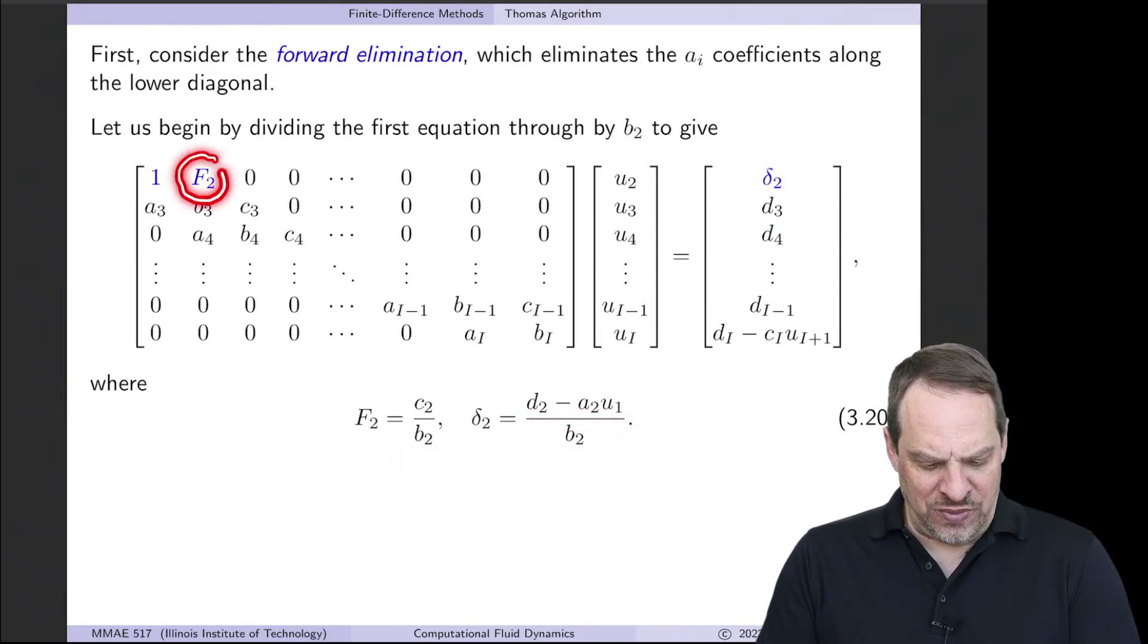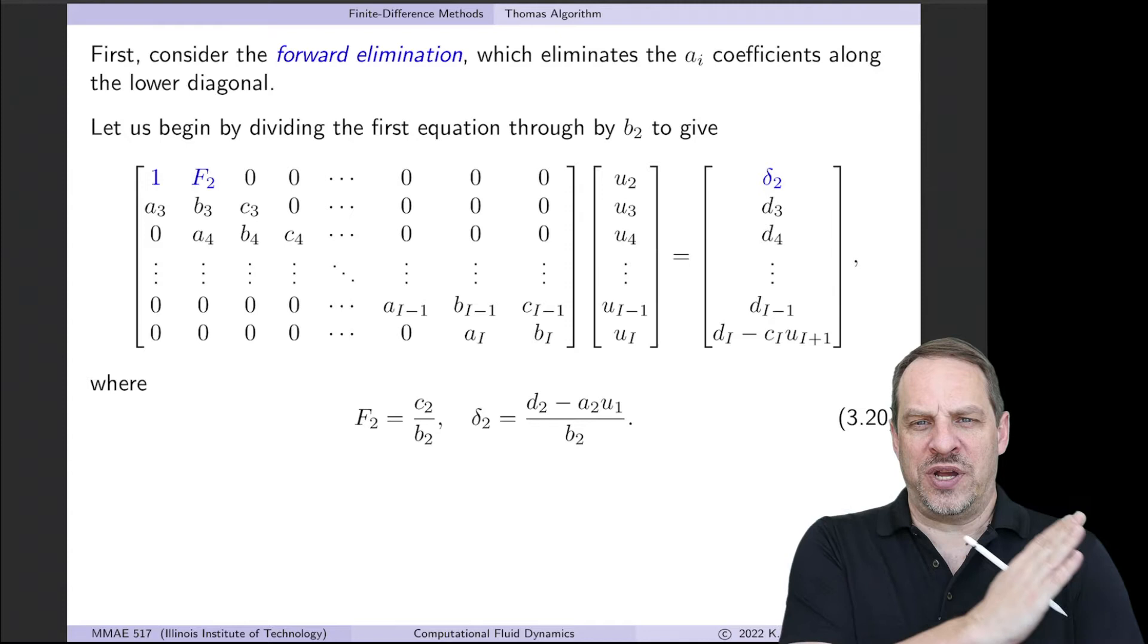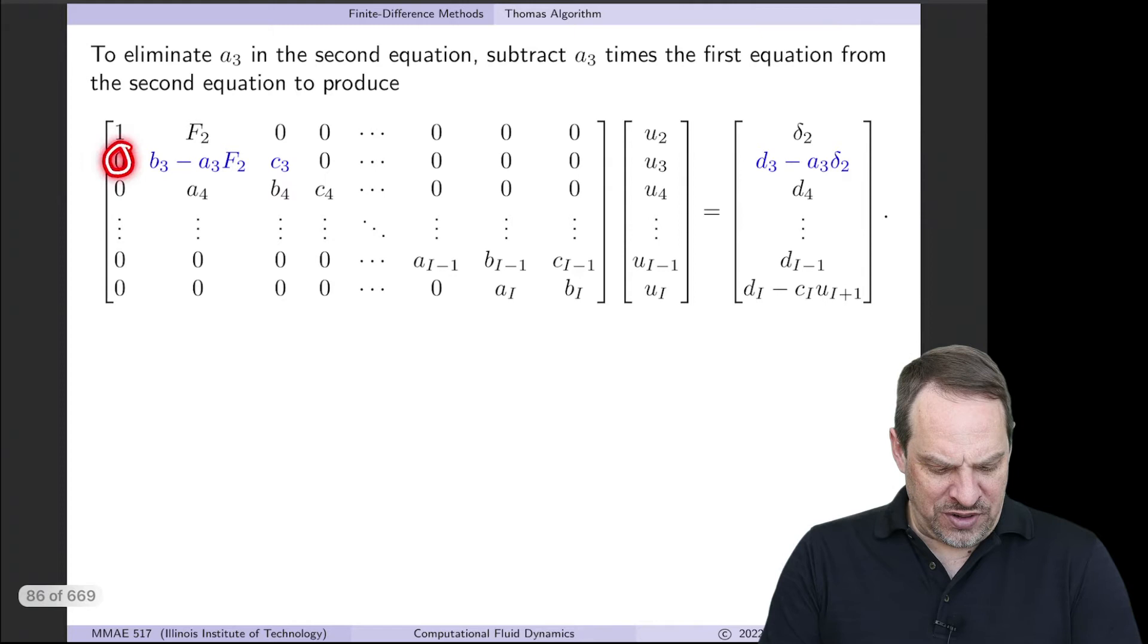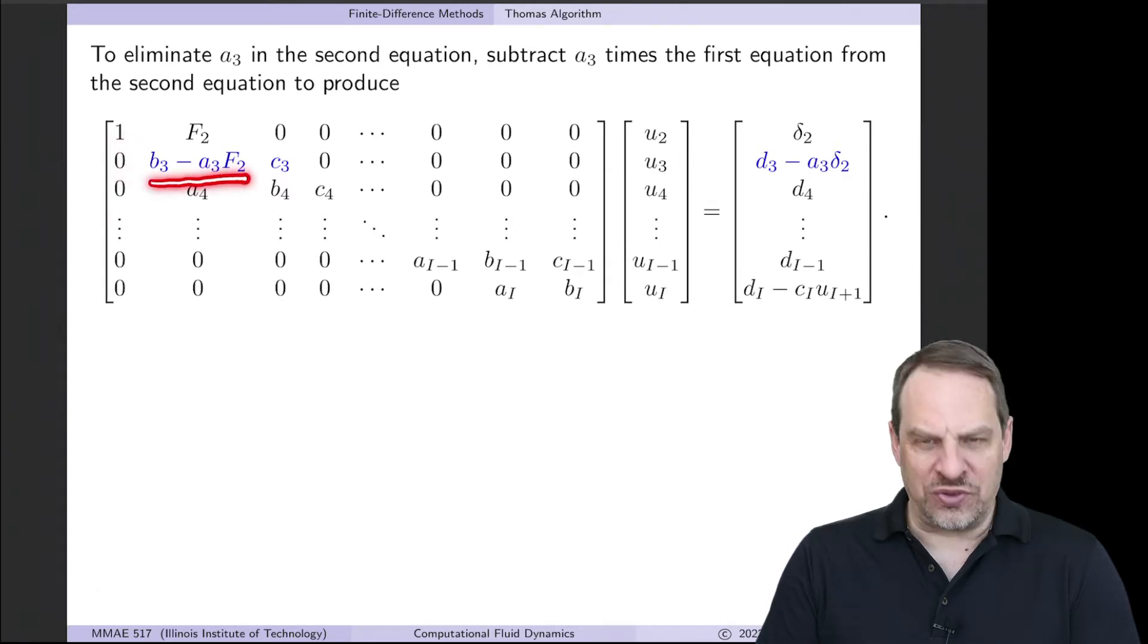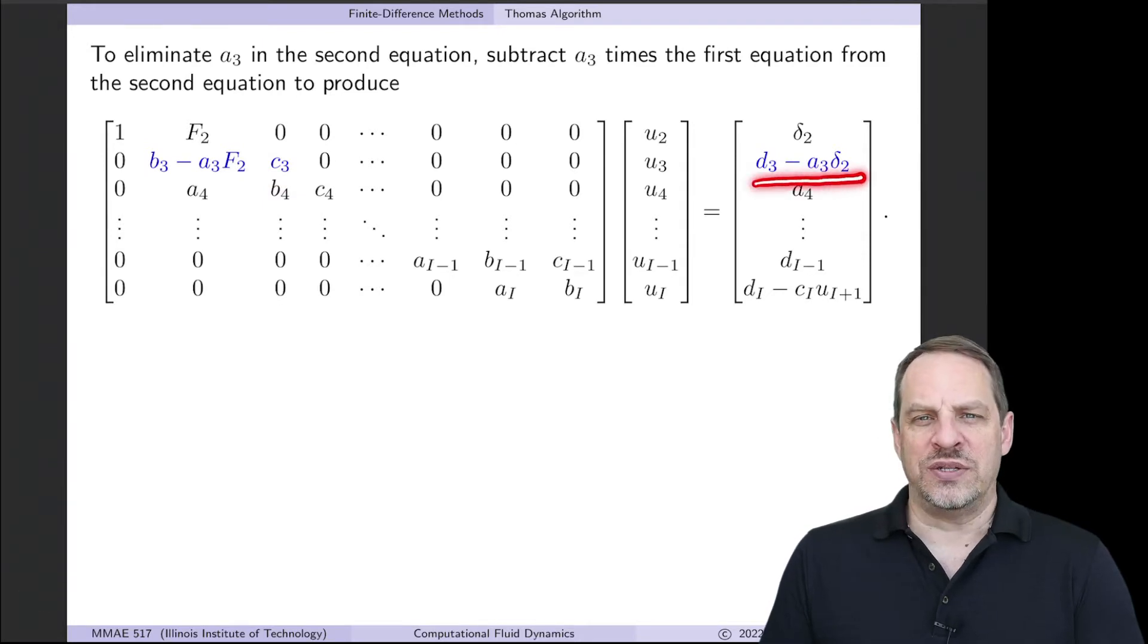You'll notice that we're going to build up two arrays or two vectors, capital F and delta, as we go from the left to the right, from 2 to capital I. Then the next step will be to eliminate this element in our matrix. So to eliminate the A3, we multiply the first row by A3 and then subtract the two rows. When we do that, we get a 0 here. We get a B3 minus A3 times F2, C3. And then this becomes a D3 minus A3 delta 2.